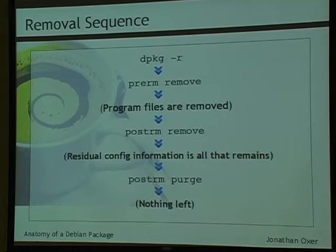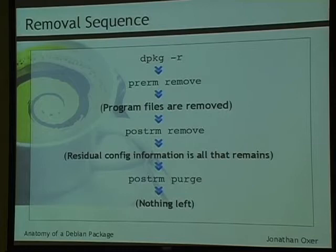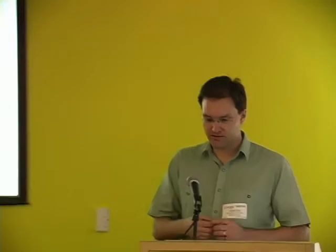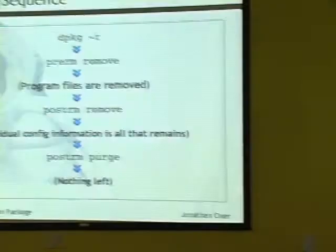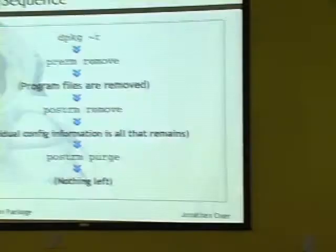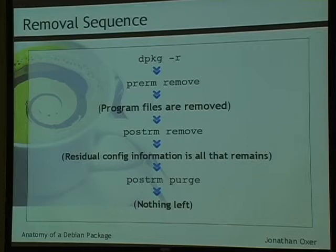Debconf prompts you for answers during install, either on the command line or through a GUI. The answers are stored and accessible as variables within your preinst or postinst scripts. This separates the logic from the script itself — you ask questions in advance. For something like Apache, you can put in an example httpd.conf but explicitly declare it as a config file so it won't be removed unless the --purge option is used.